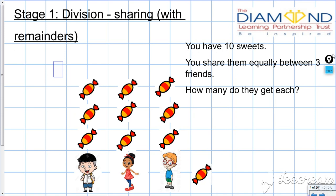So the answer to our question here is: there's ten sweets shared among three people. They're going to have three sweets each and there's going to be one left over, so remainder one. That's stage one sharing with remainders.